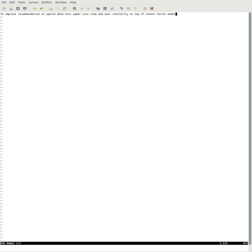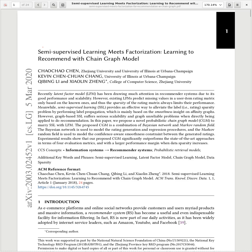To improve recommendation on sparse data, this paper uses item and user similarity on top of latent factor models. This paper is called Semi-supervised learning meets factorization: learning to recommend with chain graph model. It is from March 5th of 2020.